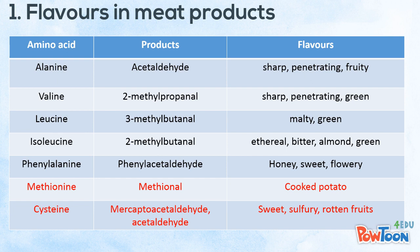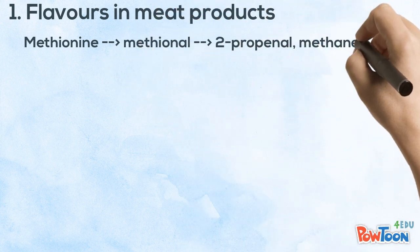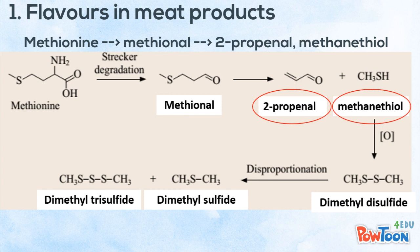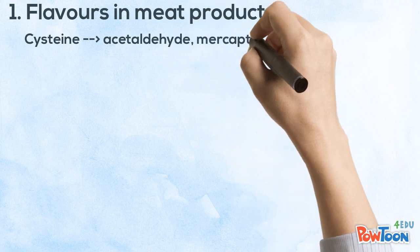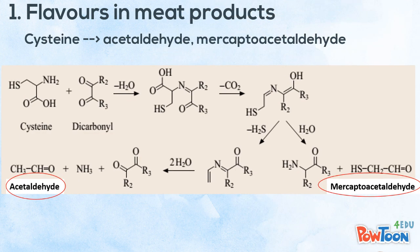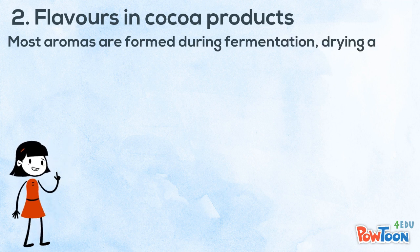Methionine and cysteine are the two most important amino acids in the formation of meat aroma. Methionine produces methional with the aroma of baked potatoes. 2-propenyl and methanethiol are formed from the methionals, which are reactive intermediates participating in further reactions to form various final aromatic products. Cysteine produces a number of highly reactive intermediates with flavor-generating potential, such as ammonia, hydrogen sulfide, acetaldehyde, and mercaptoacetaldehyde.